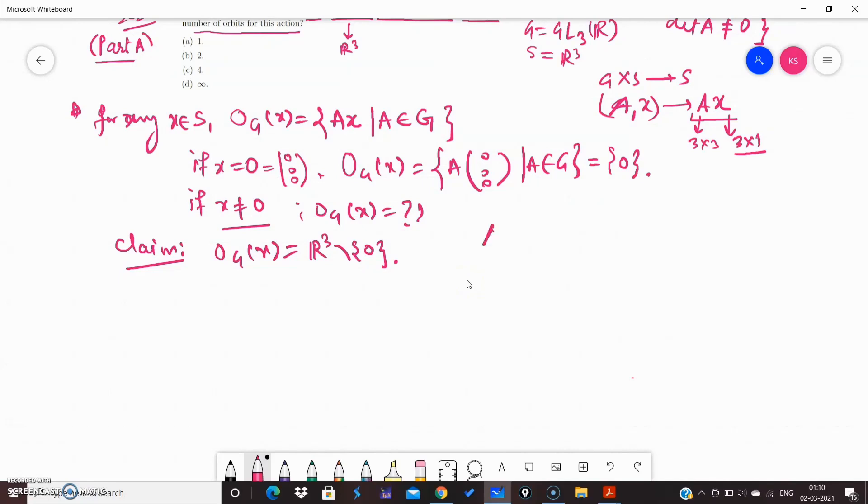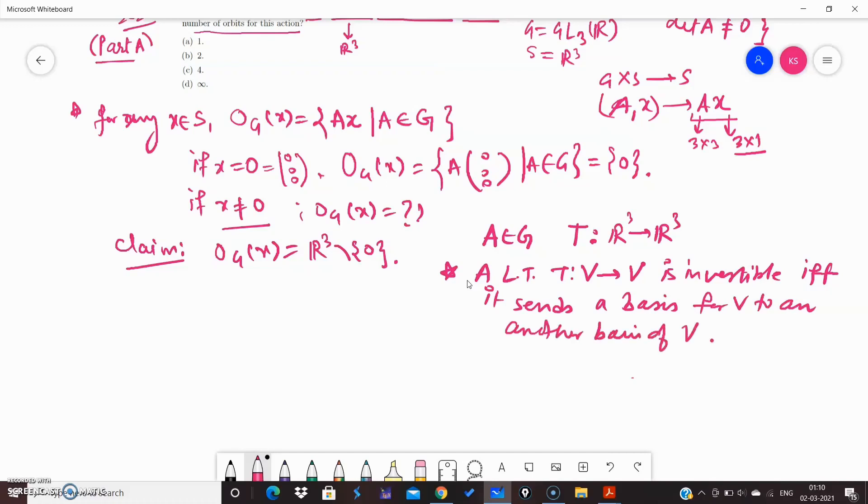First, think of an invertible matrix A as a linear transformation. An invertible matrix is invertible if and only if it sends a basis for V to another basis of V. So we have a linear transformation from R³ to R³. We have a result which we will use here: a linear transformation T from any vector space V to V is invertible if and only if it sends a basis for V to another basis of V.